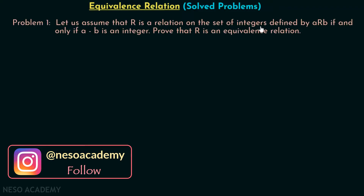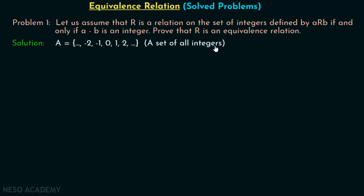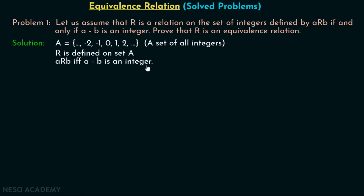R is defined on the set of integers. Relation R is the set of all ordered pairs of the form (A, B) if and only if A minus B is an integer. Let us assume that set A represents the set of all integers. R is defined on set A, and R is nothing but A related to B if and only if A minus B is an integer. We have to prove that this relation is an equivalence relation.